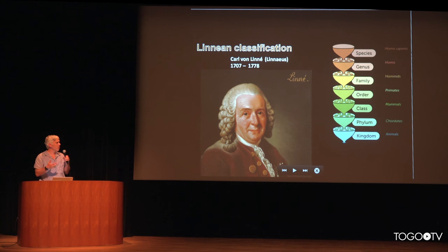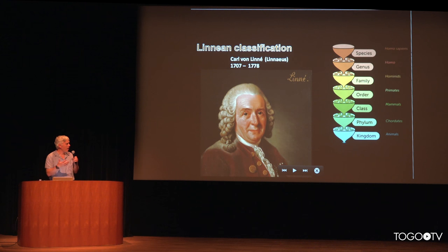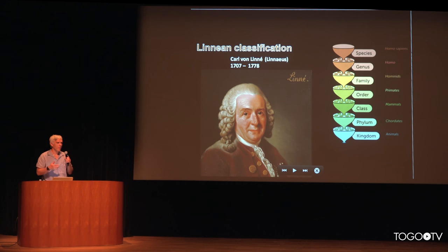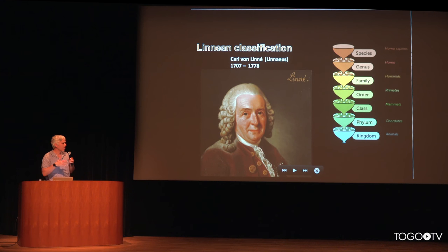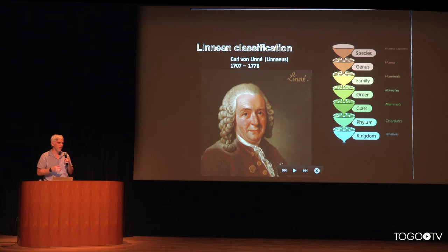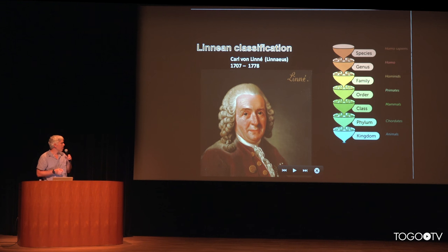The hierarchy includes species, genus, family, order, class, phylum, and then kingdom. There are some intermediate ones too, but that is the basic structure that we generally apply in the NCBI taxonomy database.